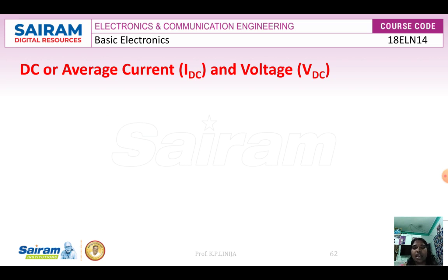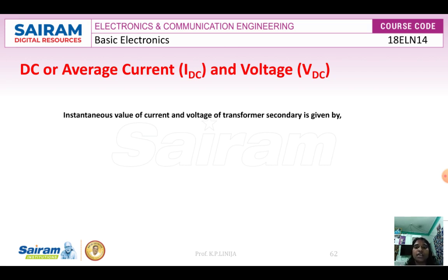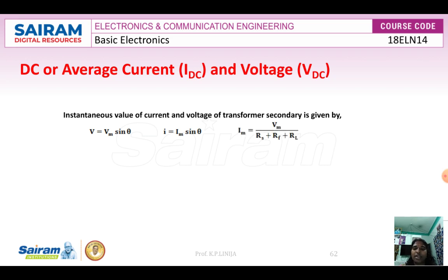First, let us look at DC or average current. DC current or average current is represented by IDC, and DC voltage or average voltage is represented as VDC. The instantaneous value of current and voltage of the transformer secondary is given by: V equals Vm·sin(θ) and current I equals Im·sin(θ), where Vm is maximum voltage and Im is maximum current. We know that I equals V divided by R.